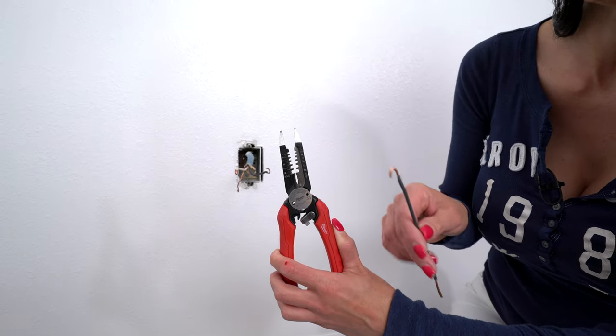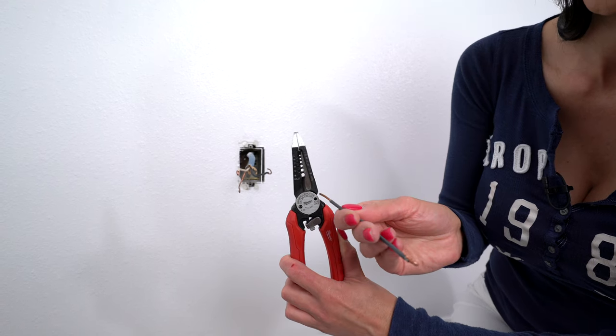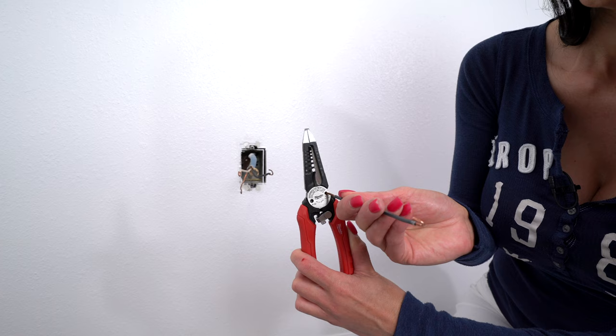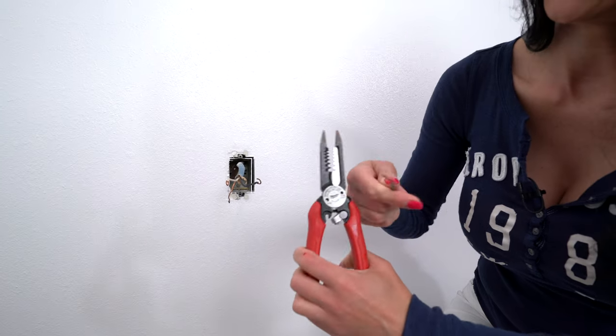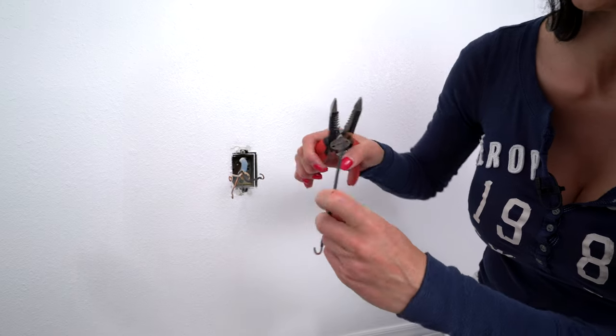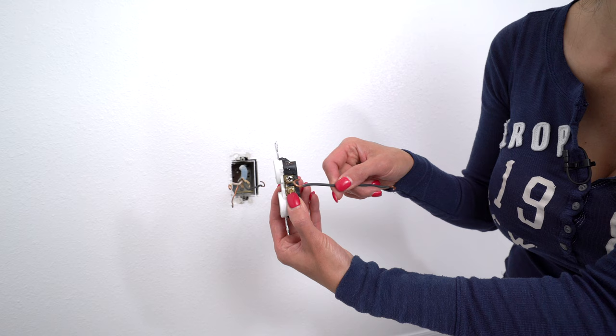You can also use these holes to make your loop that goes around the screw. You just close it, put it in the hole, and then turn it all the way around. It makes your loop. And if you need to, you can crimp it a little more. Then you can put it on your screw.